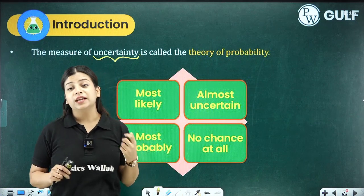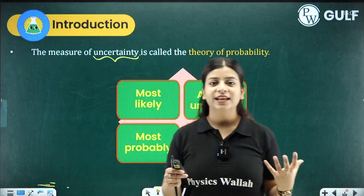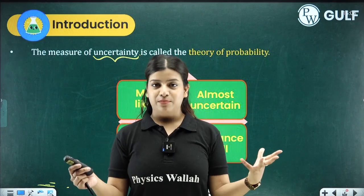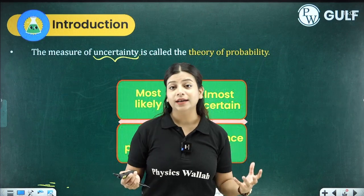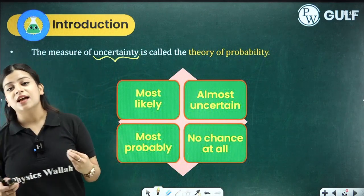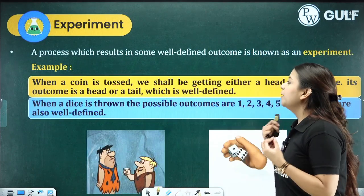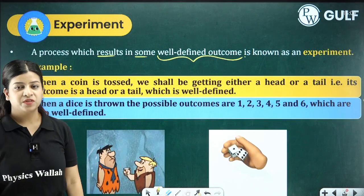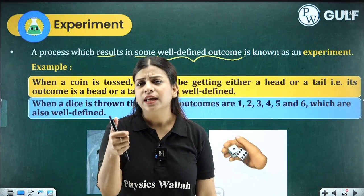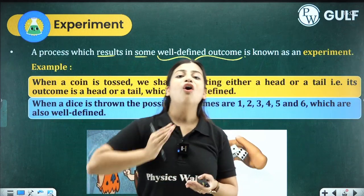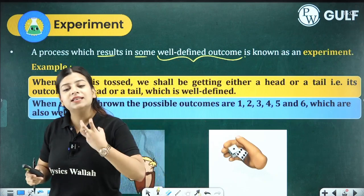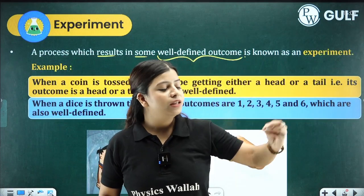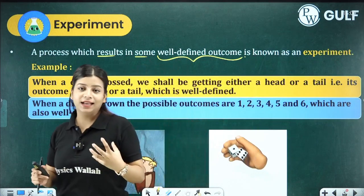During COVID, we played a lot of Ludo and games with dice. On that dice, getting number one or number six, or any number — it's a chance of an event, or we can say it's a probability, because any number can come on the dice. All these things fall under the measurement of probability. A process which results in some well-defined outcomes is known as an experiment. For example, tossing a coin: I'm sure either a head or a tail will come. These are all the possible outcomes I'm already aware of.